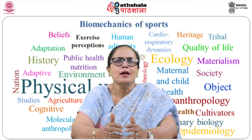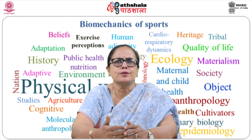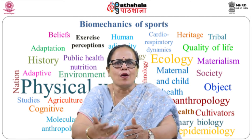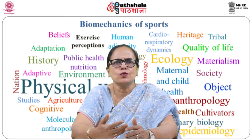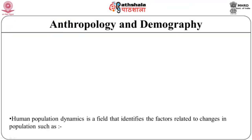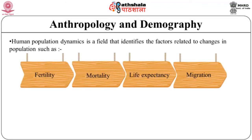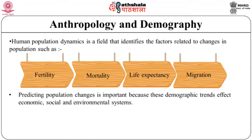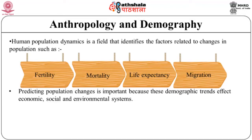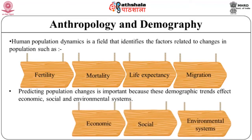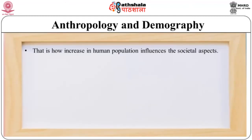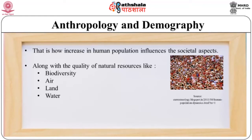Far more important for practitioners from other social science disciplines is to establish the ways in which human groups define themselves and those around them, usually involving the interaction of complex social, cultural or ethnic features. Human population dynamics is a field that identifies the factors related to changes in the population such as fertility, mortality, life expectancy and migration. Predicting population changes is important because these demographic trends affect economic, social and environmental systems, including the quality of natural resources like biodiversity, air, land and water.